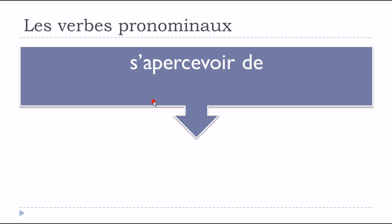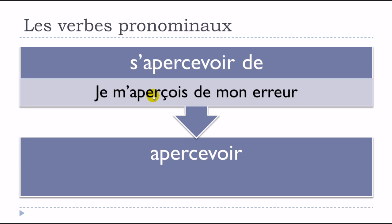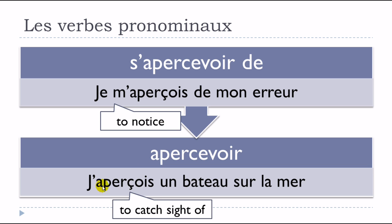Let's look at an example: 'je m'aperçois de mon erreur' — s'apercevoir means 'to notice' — and 'j'aperçois un bateau sur la mer' — apercevoir means 'to catch sight of'. So as you can see, they look the same — apercevoir and s'apercevoir — but the meaning is really very different.